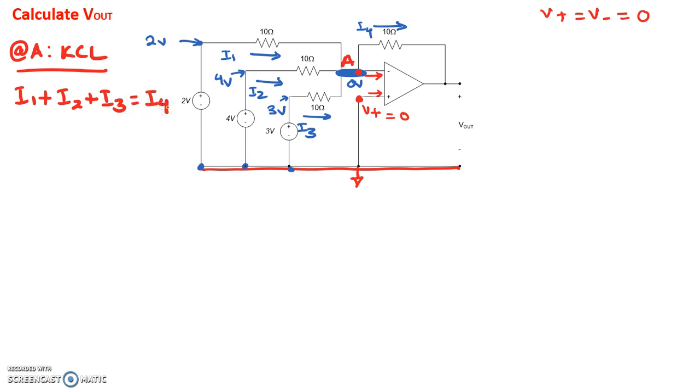So I1 is the current through the top 10 ohm resistor. It has two volts on one side, zero volts on the other side. So I1 equals two volts minus zero divided by 10 ohms. I2 is four volts on this side, zero on the other. So four minus zero divided by 10.